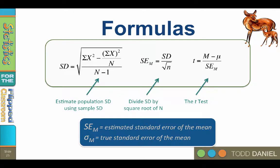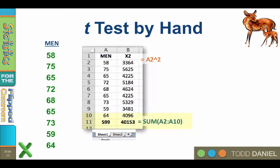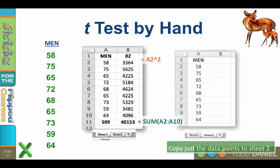We are going to continue this example in Excel. On the first Excel spreadsheet, we will create a column titled 'Men' and enter the data. Then we will create a second column titled x² for the x-squared values and square each of the x values. Finally, we will add up the columns. We will also copy just the x values to a second Excel spreadsheet so that we can import them into SPSS later and do this same t-test in SPSS.